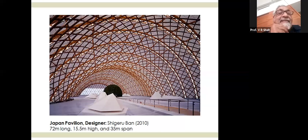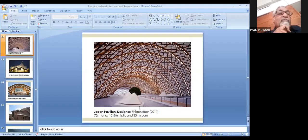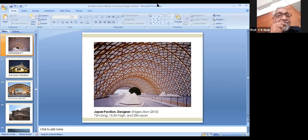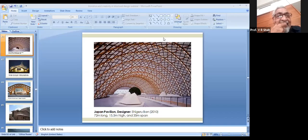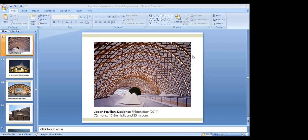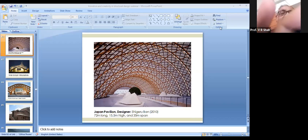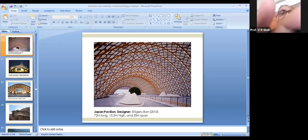The audience is asked to guess the material of a structure shown on screen. Various guesses come in — glass, steel, paper, wood, fiber, bamboo. The answer is paper tubes. Shigeru Ban works with this material, and a representative from Bureau Happold presented at SAP that all tubes were tested for tension and compression.